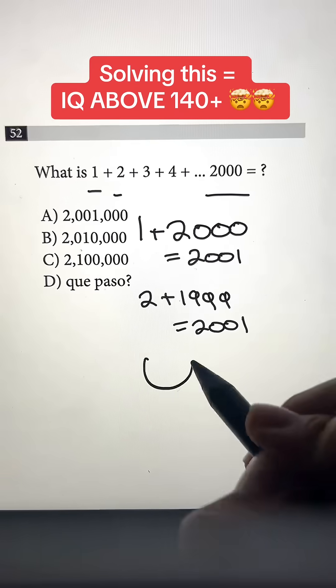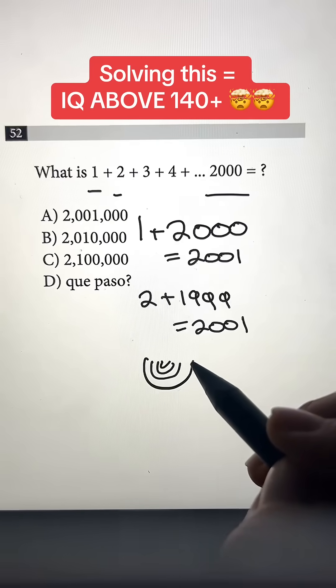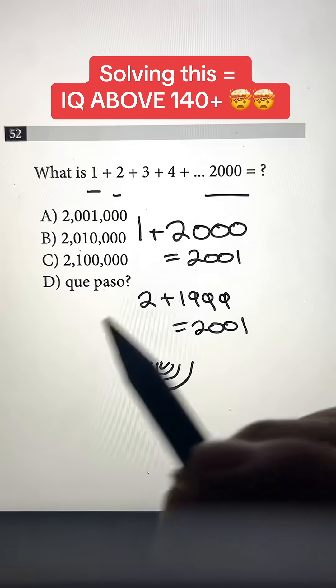So you see a pattern? We're just going to keep making pairs of small numbers and big numbers all the way until we get through all the numbers.